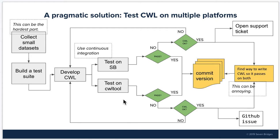The next case is: if you find that the CWL you have written is correct according to the specification as best as you can understand it, and it passes on one platform but not the other, then you have to find a way to rewrite the CWL so that it passes on both platforms. You should also open a support ticket or an issue based on which platform was failing your correct CWL. In my experience, I've always found a way to write CWL simply so that it runs on both CWL tool and the Seven Bridges platform executor.